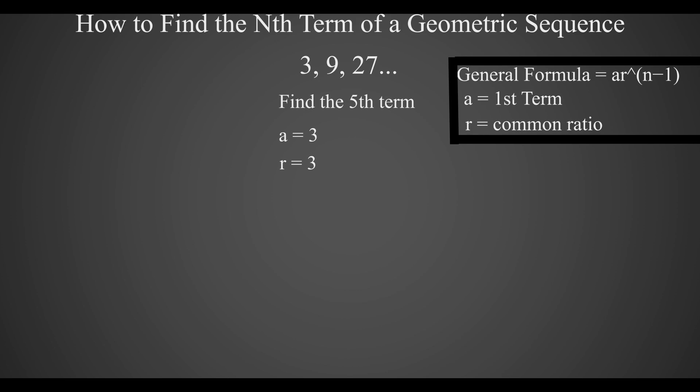We get our equation 3 times 3 to the power of 5 minus 1, since we want to find the fifth term, which means you get 3 times 3 to the power of 4. Now 3 to the power of 4 is 81, so we get 3 times 81, which is 243.